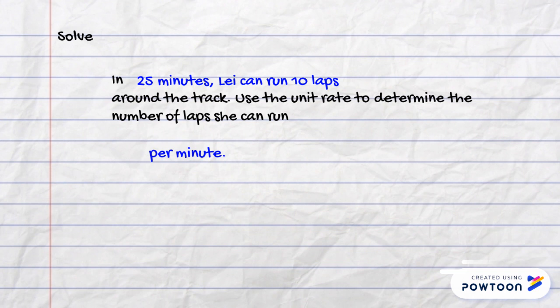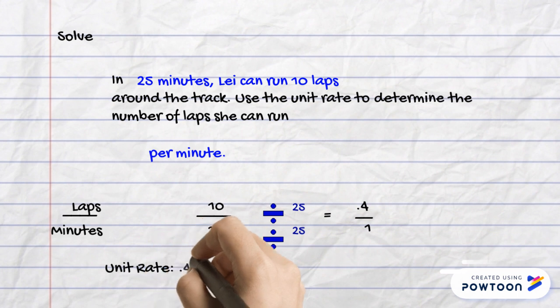We're going to solve this by dividing laps over the amount of minutes used to complete them. She completed 10 laps in 25 minutes. We're going to divide 25 from the top and bottom to get an equivalent fraction of 0.4 over 1, with a unit rate of 0.4 laps per minute.